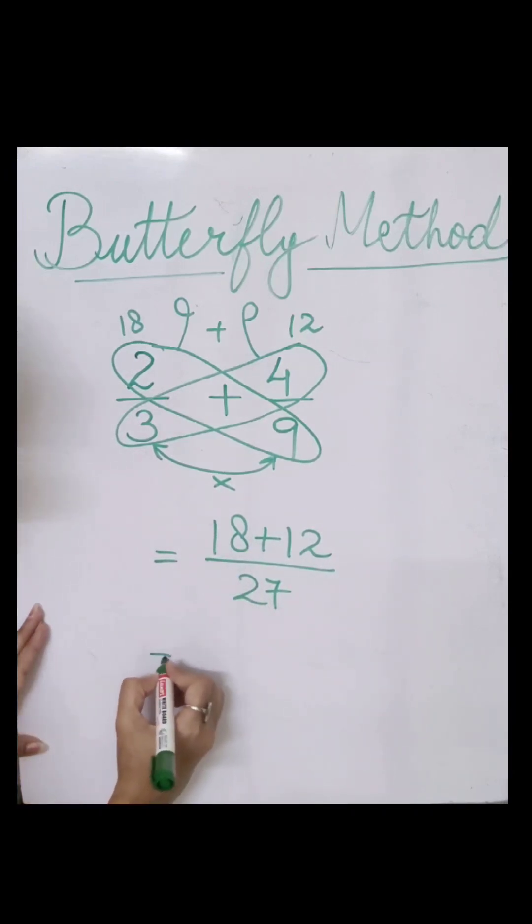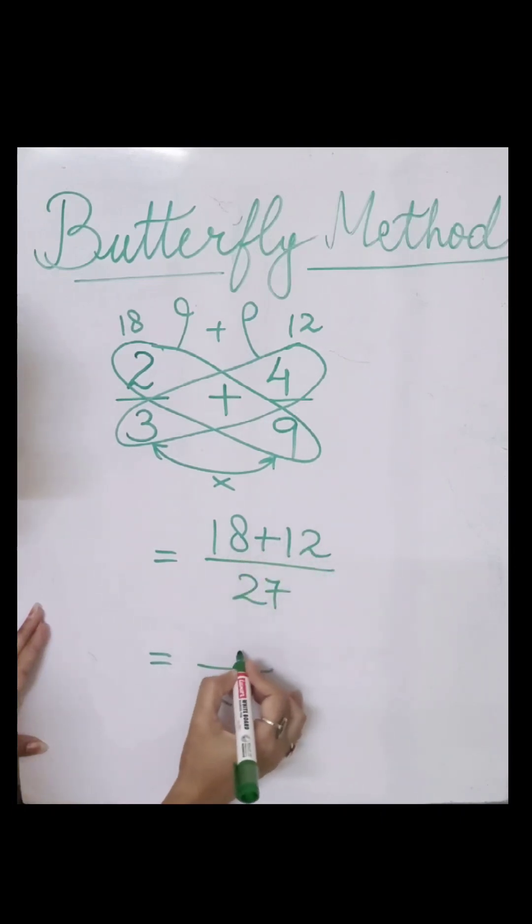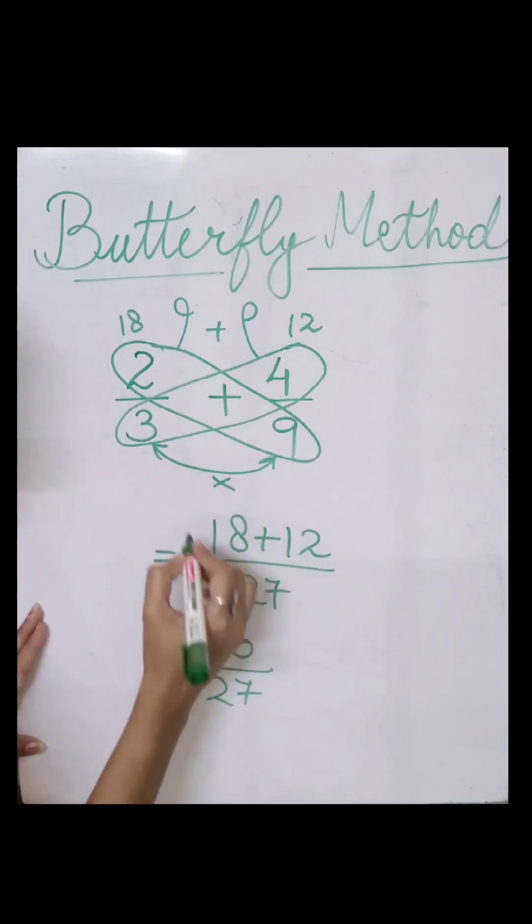Now to get your answer, simply add these two and the denominator will be 27. 8 plus 2, 10, 1 carry. 1 plus 1, 2 plus 1 carry, 30 upon 27.